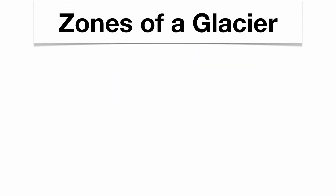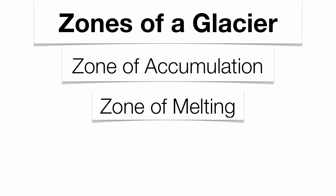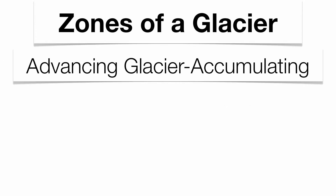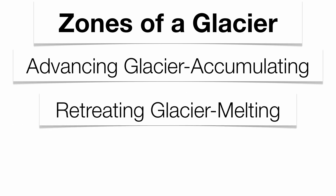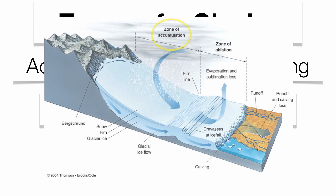Now you have a couple zones of the glacier: the zone of accumulation, the zone of melting, and then finally the snow line. When you get more accumulation than melting, the glacier's going to get bigger. When you get more melting than accumulation, the glacier's going to get smaller. When melting and accumulation equal each other, that glacier's going to be stationary — it means we have reached equilibrium with the glacier. So there's your zone of accumulation and there's your zone of melting.